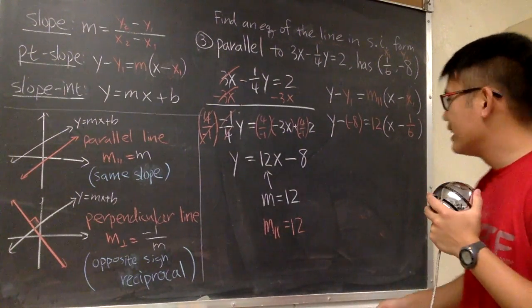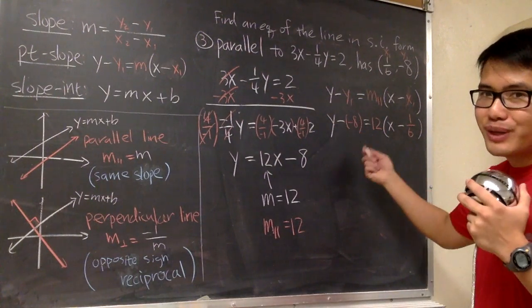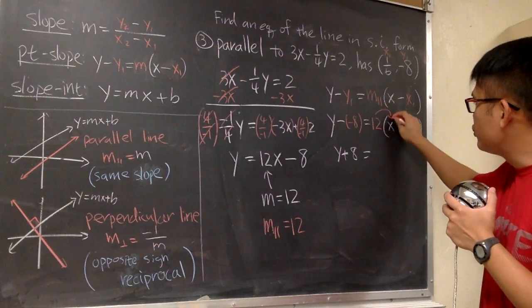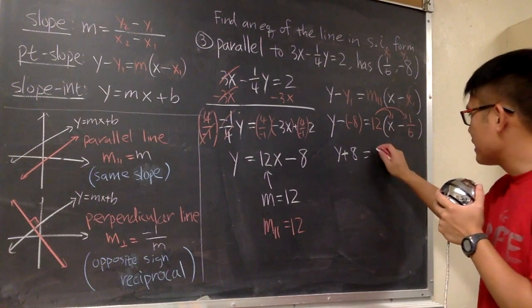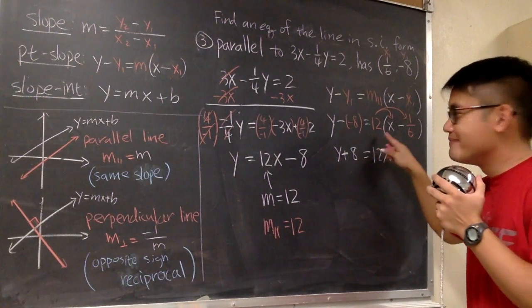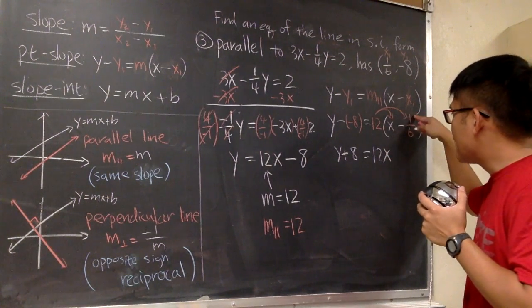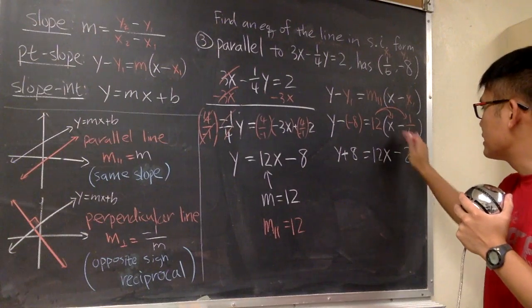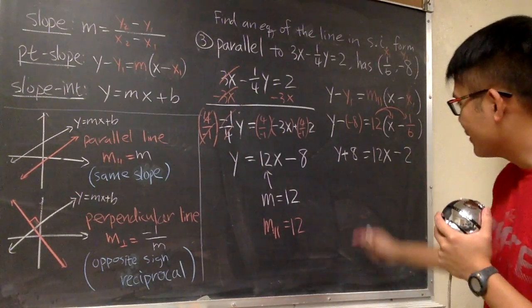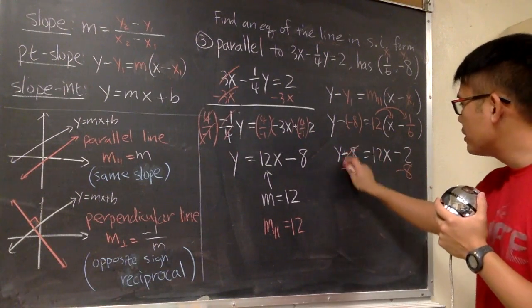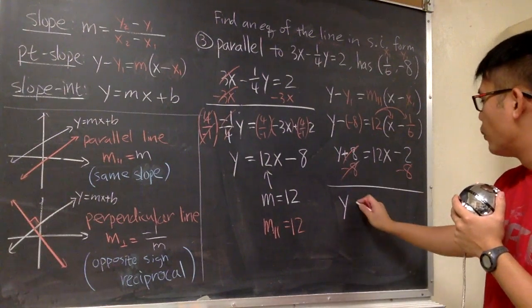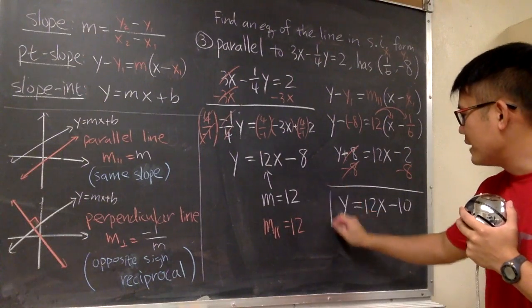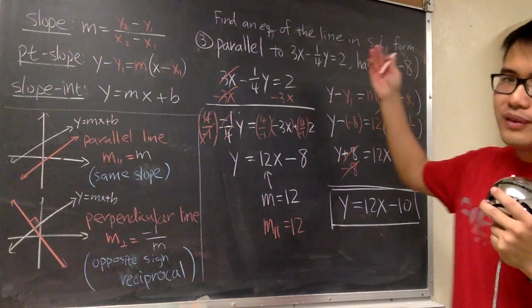Now, just do the work. As you can see, y minus negative 8 is y plus 8. And then we work out these parentheses — we take the 12 and distribute into the parentheses. 12 times x is just 12x. And this is positive 12 times negative 1 over 6 — that's 12 over 6, which is 2, and that's minus. So one more step: y plus 8 — subtract 8 here and subtract 8 here. They cancel, and at the end y is by itself. y is equal to 12x, then minus 2 minus 8, that's minus 10. y is equal to mx plus b — slope-intercept form — for the answer of this one.